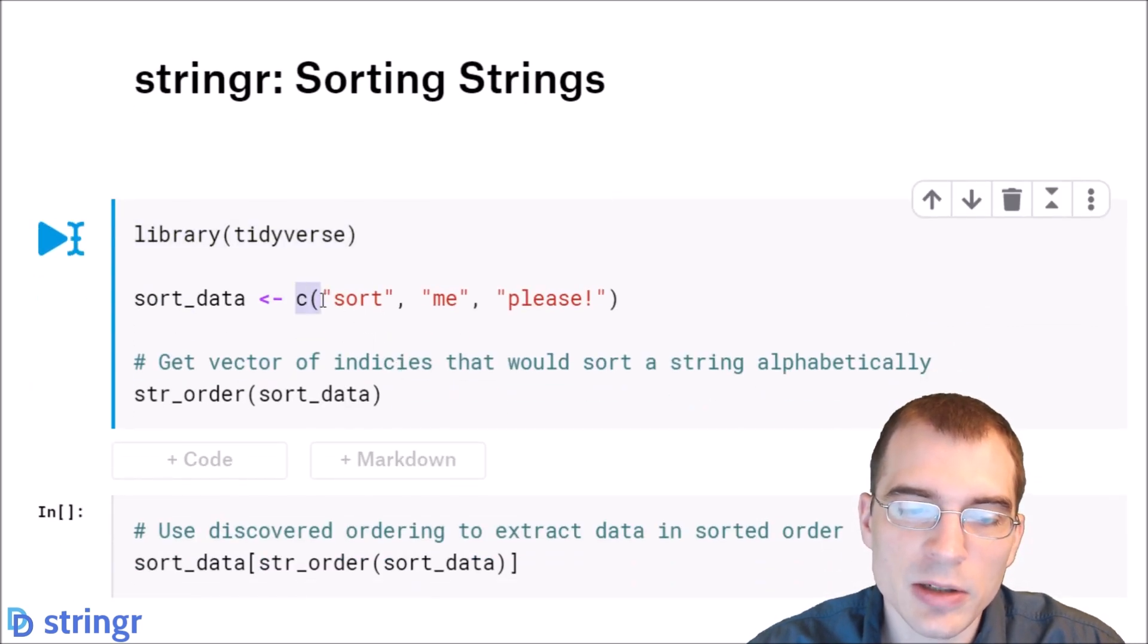So we have a vector of length 3 saying sort me, please. And first, we're going to show how to actually find the order that would cause it to be sorted alphabetically. So to do that, you can use the str underscore order function.